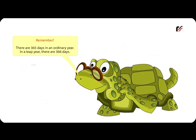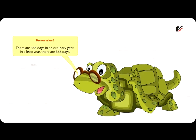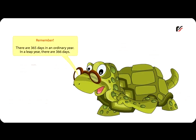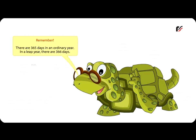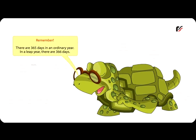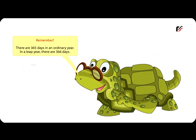Remember, there are 365 days in an ordinary year. In a leap year, there are 366 days.